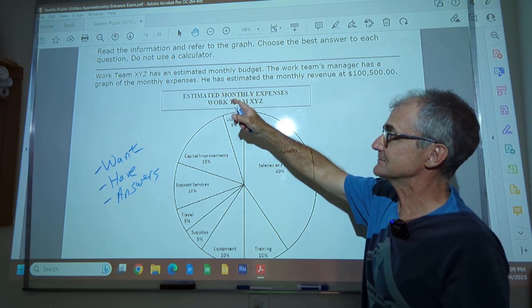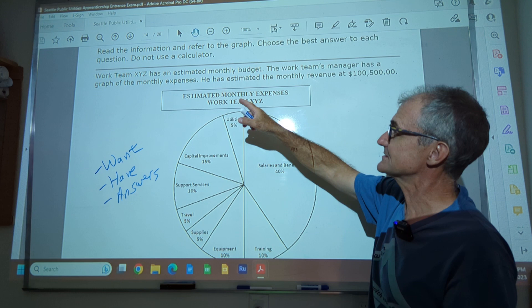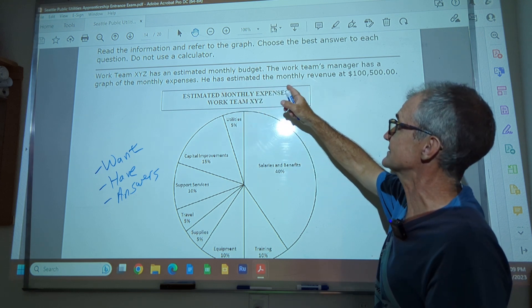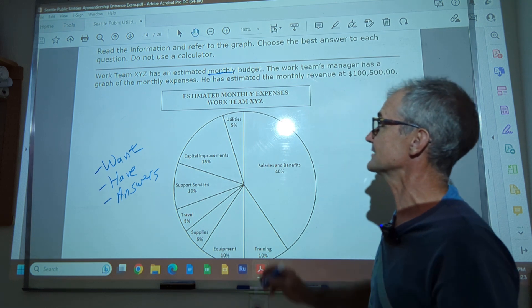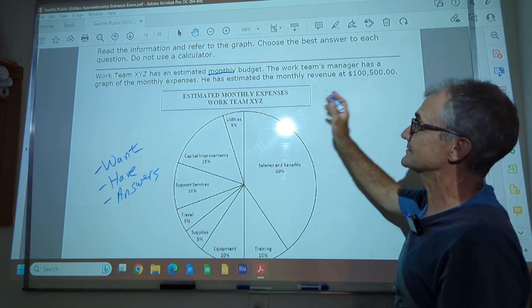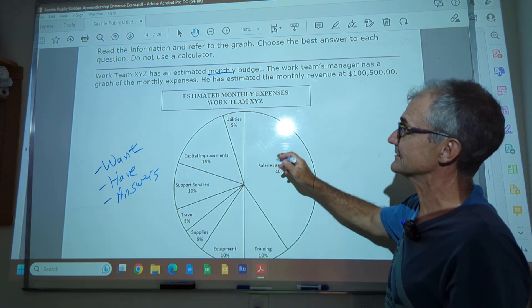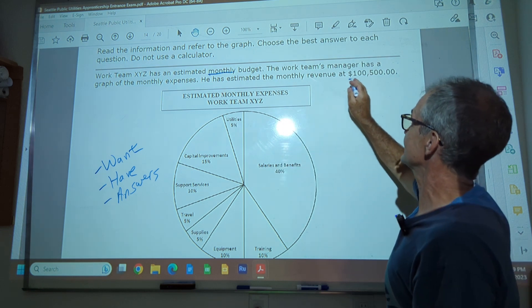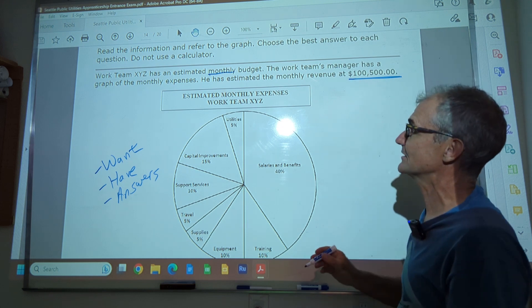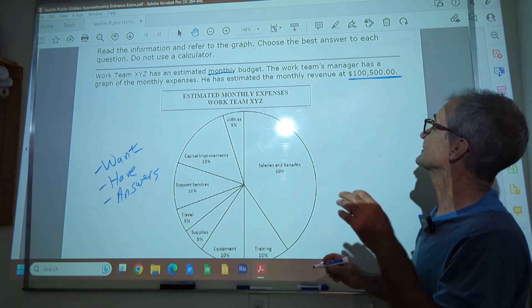Do not use a calculator. Work team XYZ has an estimated monthly budget. So monthly is important. We don't want to make sure they're referring to years later. The work team's manager has a graph of the monthly expenses. I know it might be hard to see, it's right here. He has an estimated revenue of this. So that's his budget, $100,500.